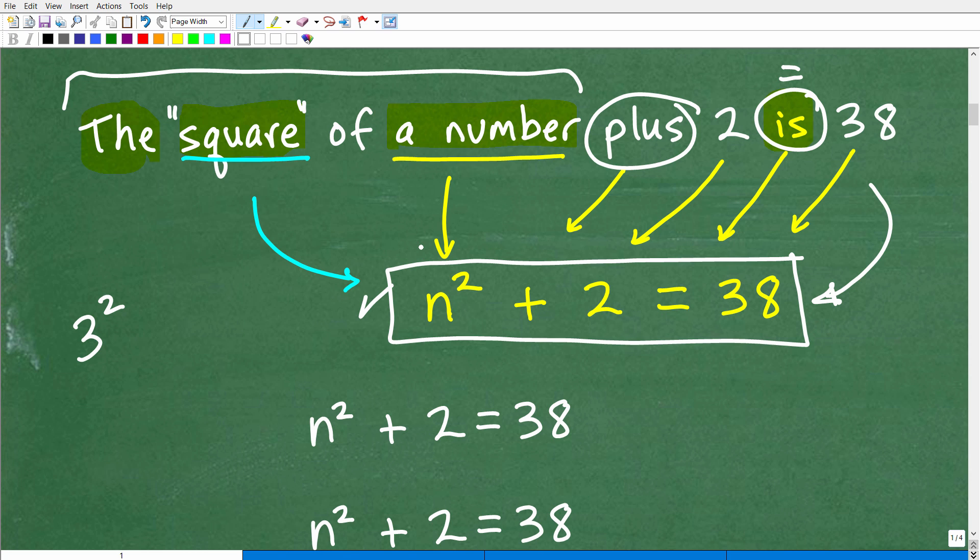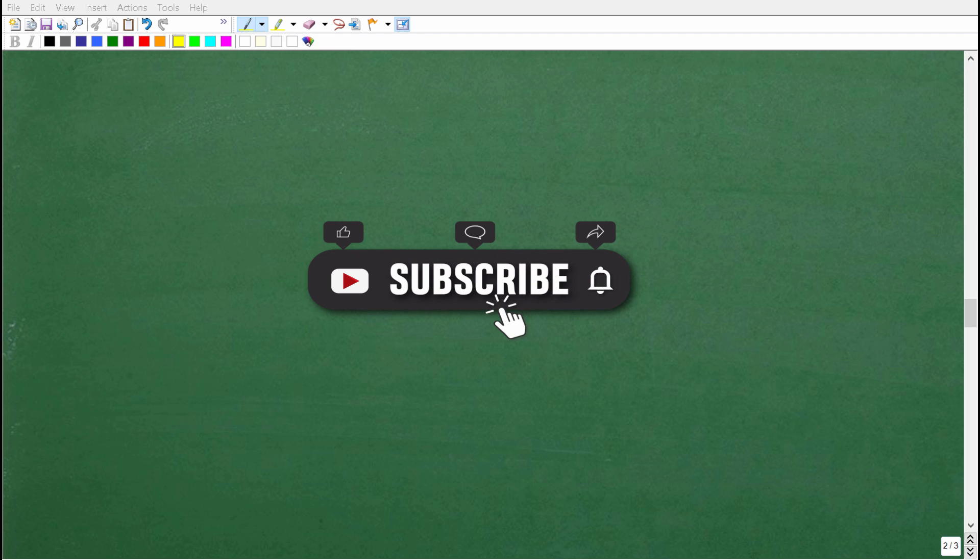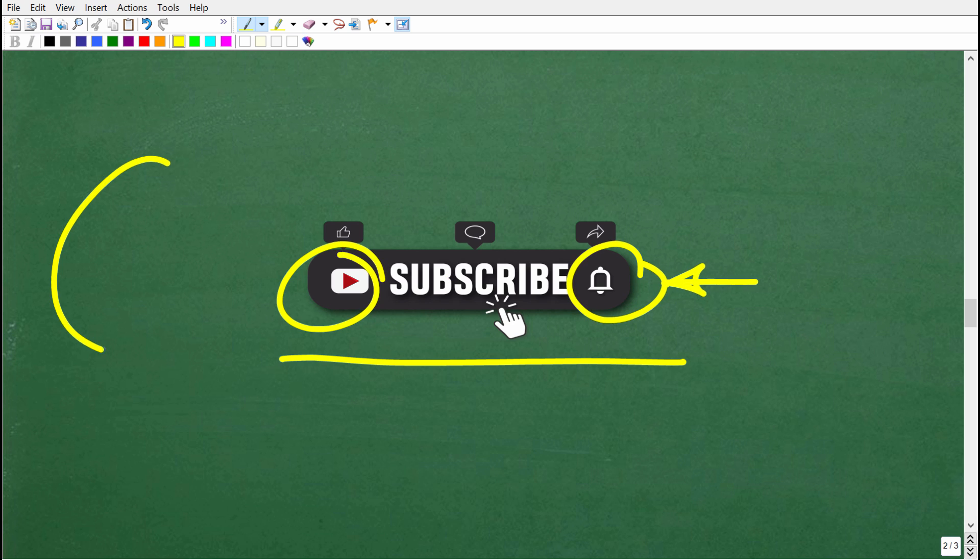Now it's up to you to be able to solve this thing. We have n² + 2 = 38. Before we continue on, I have a quick question for you. Are you enjoying this content? If you are, please consider hitting that subscribe button. This really does help me out on YouTube. Hit that bell notification as well. If you need additional help in math, check out my math courses. You can find links in the description of this video.